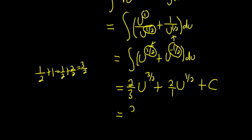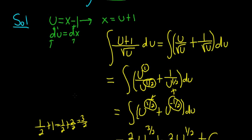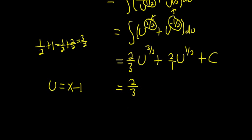So this is equal to 2 thirds. And we said u was equal to x minus 1, I believe. Let me go back up and check. Yep. So all we do now is replace all of the u's with x minus 1. So this is x minus 1 to the 3 halves, then plus 2, and then x minus 1 to the 1 half. And we still have our constant of integration, capital C.